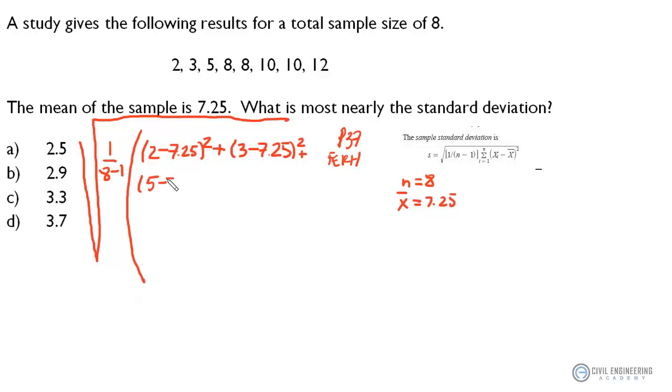5 minus, again, the sample mean squared plus the next term is 8 minus 7.25 squared plus, and you kind of get the idea of the pattern there.